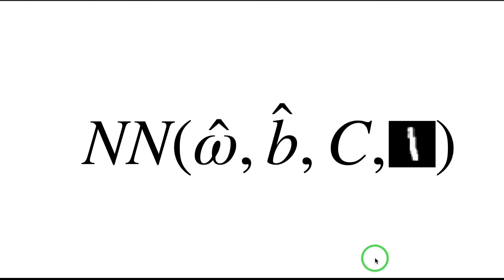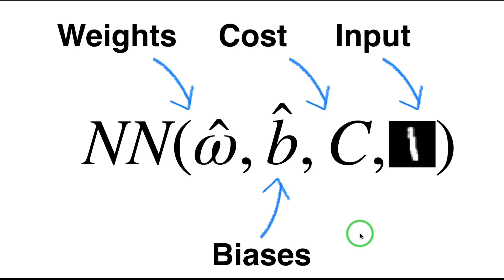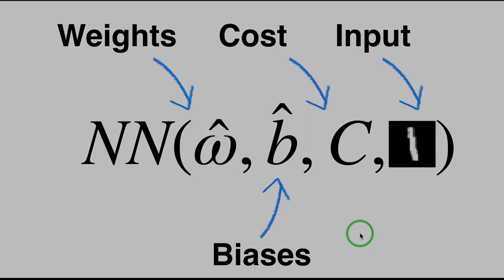For instance, here we could think about the network as a function that takes as input parameters—the weights and the biases, the cost function, and our input. Now this is a very practical way to think about it, because again, if we take input, weights, biases, and cost function, we have a kind of dual representation for the network, the ANN, that can be compared with the mathematical representation of the cost function. And this is precisely what I will do in the next slide.